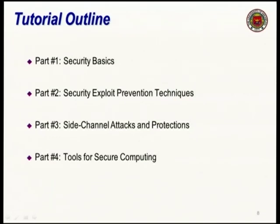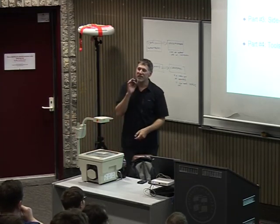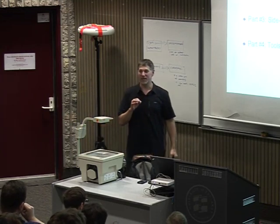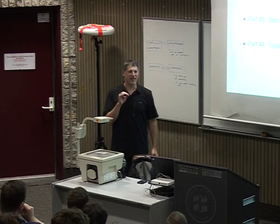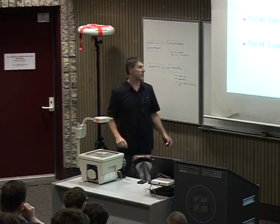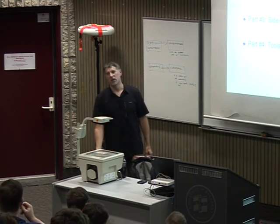There are four parts to this tutorial. First, we're going to do some security basics — looking at the tools of a secure system and the attacks perpetrated on those tools. Then we're going to look at security exploit prevention techniques: what can you do to a system to make it harder to attack from a software perspective? Then we're going to look at a really interesting area called the side channel attack — where even though you've been very careful to design your system so it cannot be attacked directly, it leaks valuable information. Finally, we'll look at some open source tools to help build more secure systems.